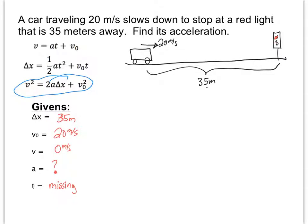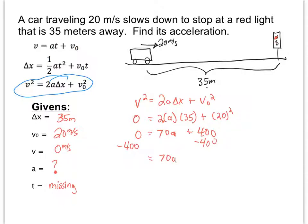So let's grab that equation. V squared is equal to 2 A delta X plus V initial squared. And let's just plug in everything that we know. We've got our velocity final squared. That's 0. We've got 2 times our acceleration, which stays the same, since that's what we're solving for. And then we've got 35 plus our initial velocity squared. So that's 20 squared. Okay. This should be 70 times A plus 400. All right. So let's get A by itself. We'll subtract 400 from both sides. And that's 70 A is equal to negative 400. Dividing 70 from both sides, we've got acceleration is equal to negative 5.71 meters per second squared.